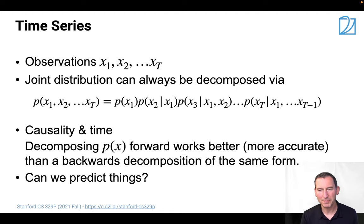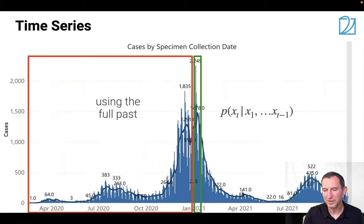The point, though, is that if I have a time series, then decomposing p of x forward always works better, it's more accurate than working backwards. And it also allows us to predict things going forward. By the way, people who predict things going backwards have a name - they're called historians and archaeologists. In any case, if we have a time series, then a lot of those decompositions can be done much more easily.